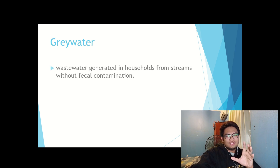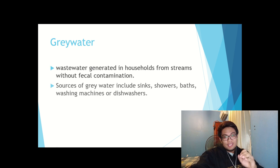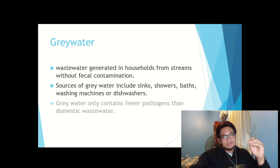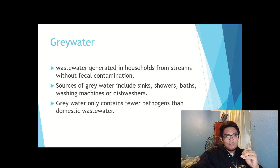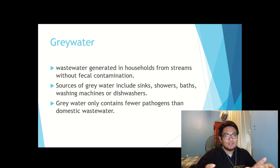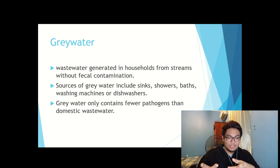Okay, let's begin with grey water first. According to Wikipedia, grey water or sullage is all the waste water generated in a household or office building from streams without fecal contamination. It means all streams except the waste water from the toilet.